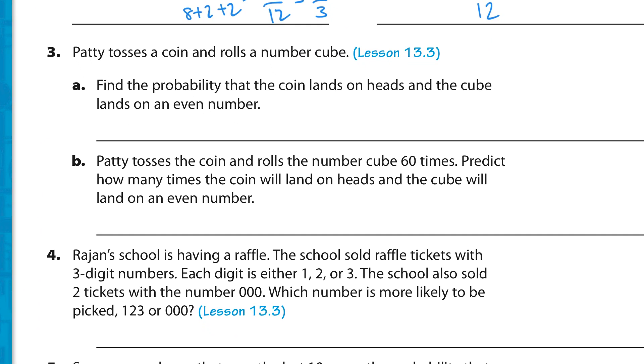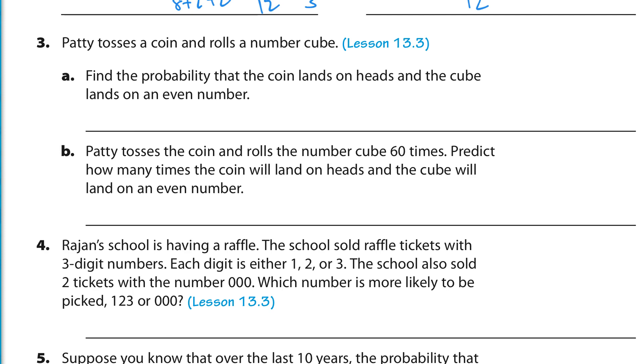Patty tosses a coin and rolls a number cube. Find the probability that the coin lands on heads and the cube lands on an even number. If it lands on heads, it's 1 heads out of 2 sides, that's 1 half. And, you have to multiply that by the probability of getting an even number. Well, there's 6 sides on the number cube and there's 3 even numbers on that. So, you multiply your probabilities. That would be 3 out of 12, or 1 fourth. Patty tosses the coin and rolls a number cube 60 times. We take our 1 fourth and you multiply it by 60, which is 60 divided by 4. And, that's 15 times.